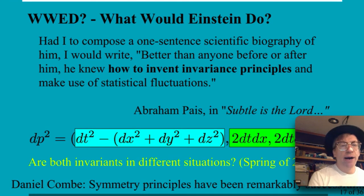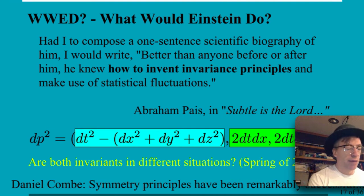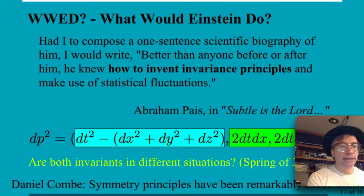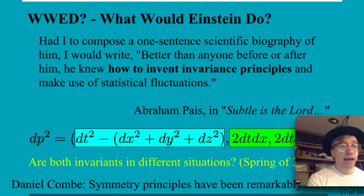This is a dangerous question for me to ask because I am a fringe physicist — not a professional — and fringe physicists have contributed essentially nothing. People always bring up Einstein. But here's a quote not from Einstein but from Abraham Pais, who wrote a scientific biography of Einstein. In the preface he wrote: 'Had I to compose a one-sentence scientific biography of him, I would write: better than anyone before or after him, he knew how to invent invariance principles and make use of statistical fluctuations.' That was the quote I was thinking about back in 2015.